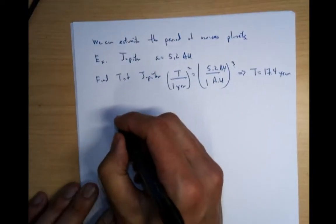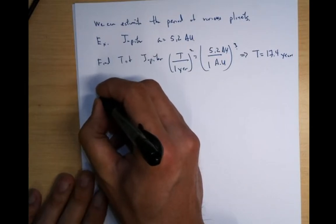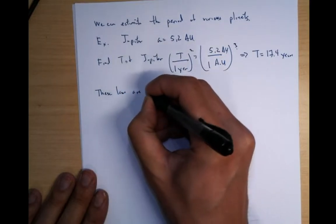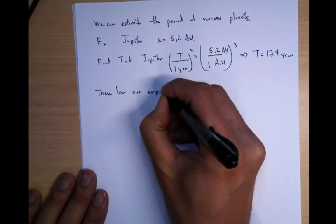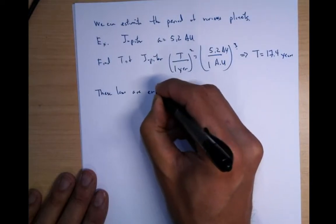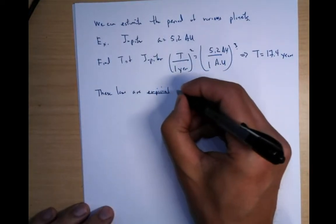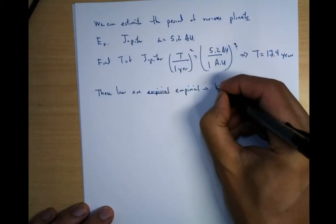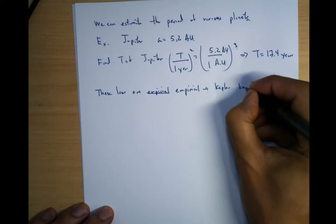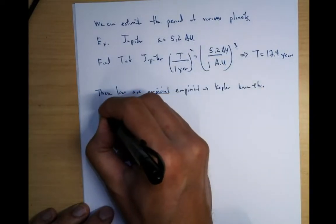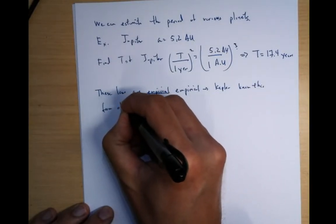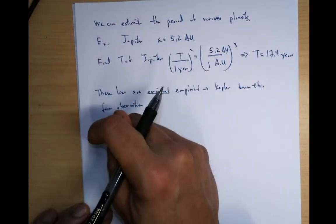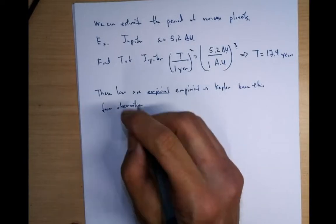So now the interesting thing about Kepler's law is that these laws are empirical. Which means empirical. So basically, Kepler knew this from observation. And it wasn't easy. Basically, you had to look at a lot of data back then. Data was collected very painstakingly.